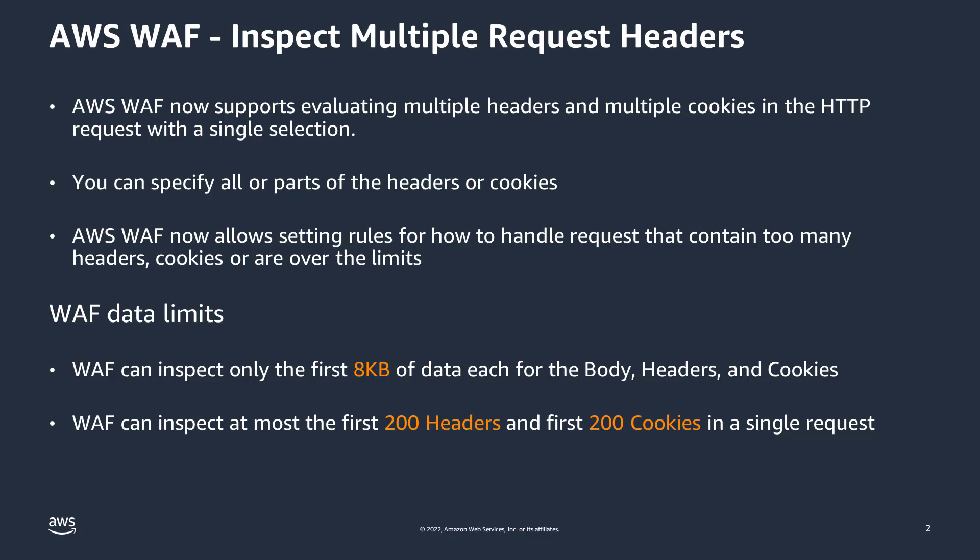Attacks may look different than expected and they don't always succeed. Often, threat actors are guessing how to compromise a request. Requests should be considered malicious if there is malicious content in the header or cookies, even if the attack fails. When making custom rules in AWS WAF, you can now inspect more than a single header or cookie in a single rule, which allows you to identify a threat even if you don't know exactly what you're looking for.